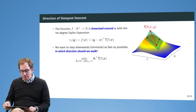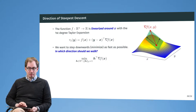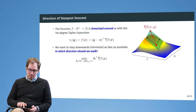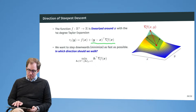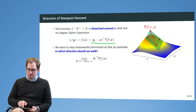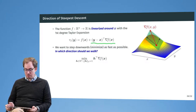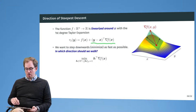Imagine we have a function and its derivative in the first order, or first degree, Taylor expansion. We have the function f(x) plus (y minus x) times the gradient of f(x). Here we have a function over y and x, where the blue point x is fixed. The question is: in which direction should we walk so that we get downwards as fast as possible? We could walk in the direction of the first derivative, the second derivative, or a combination of the two.